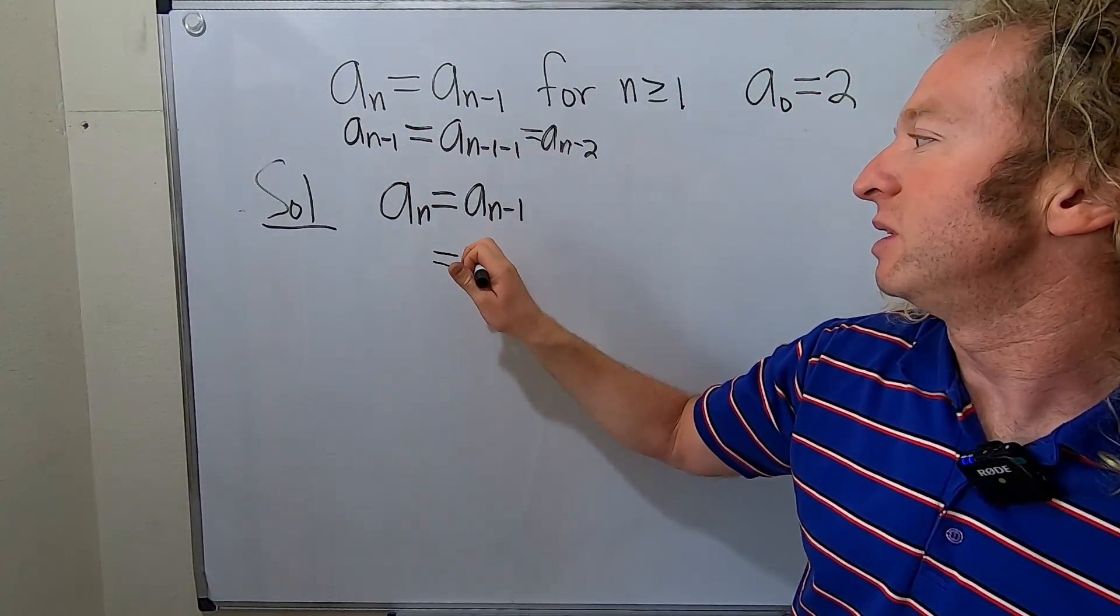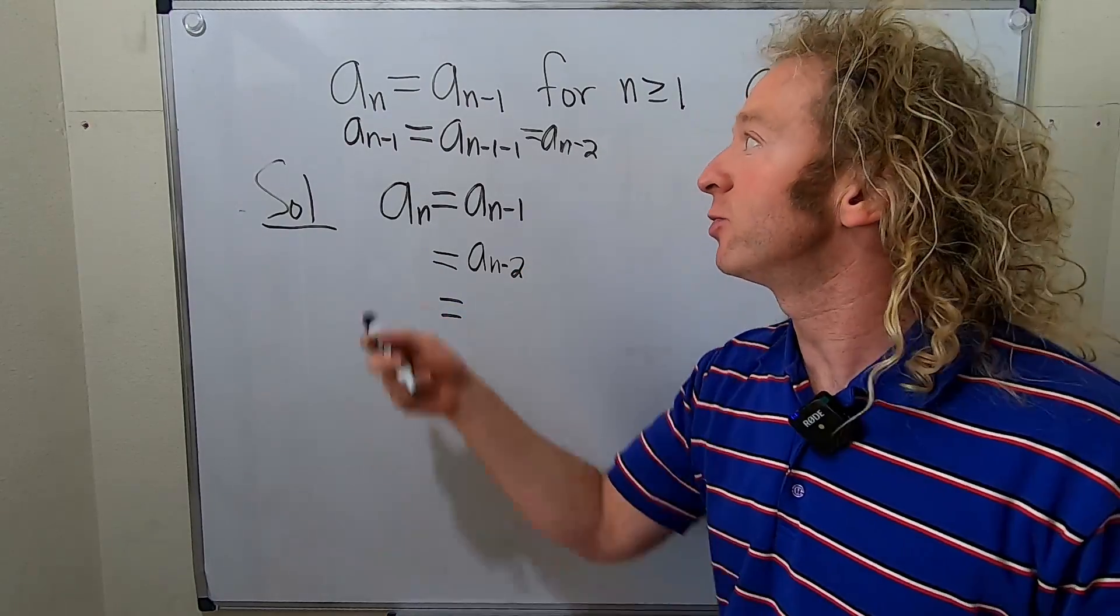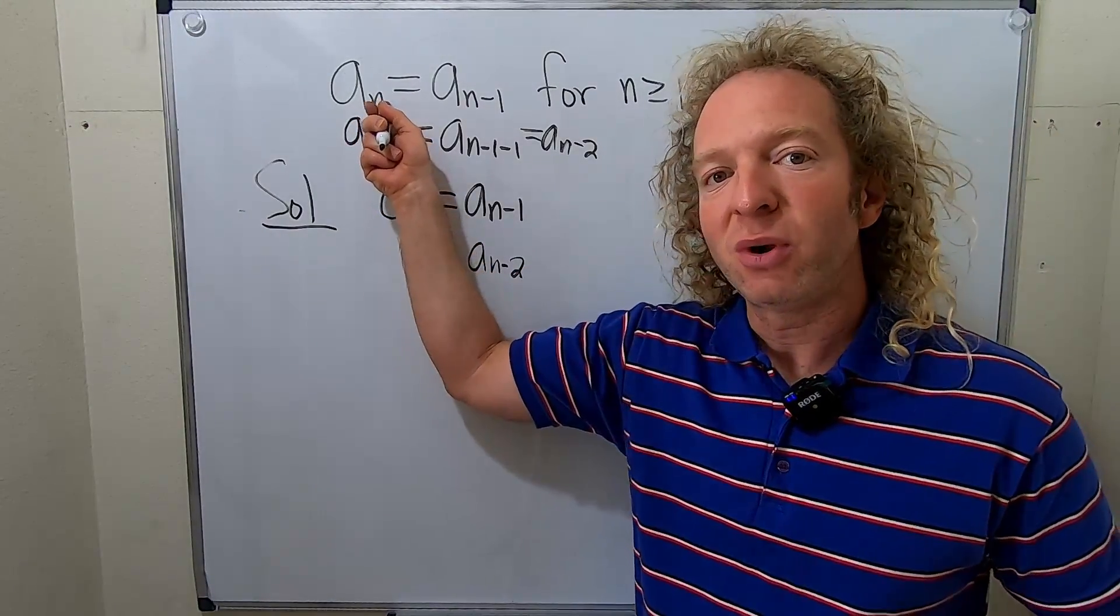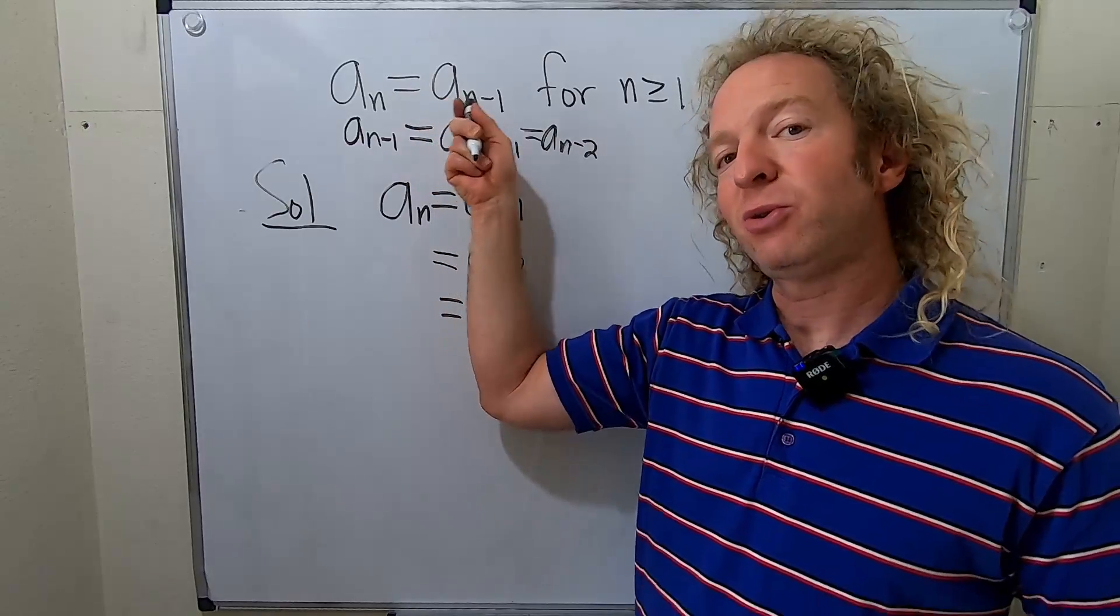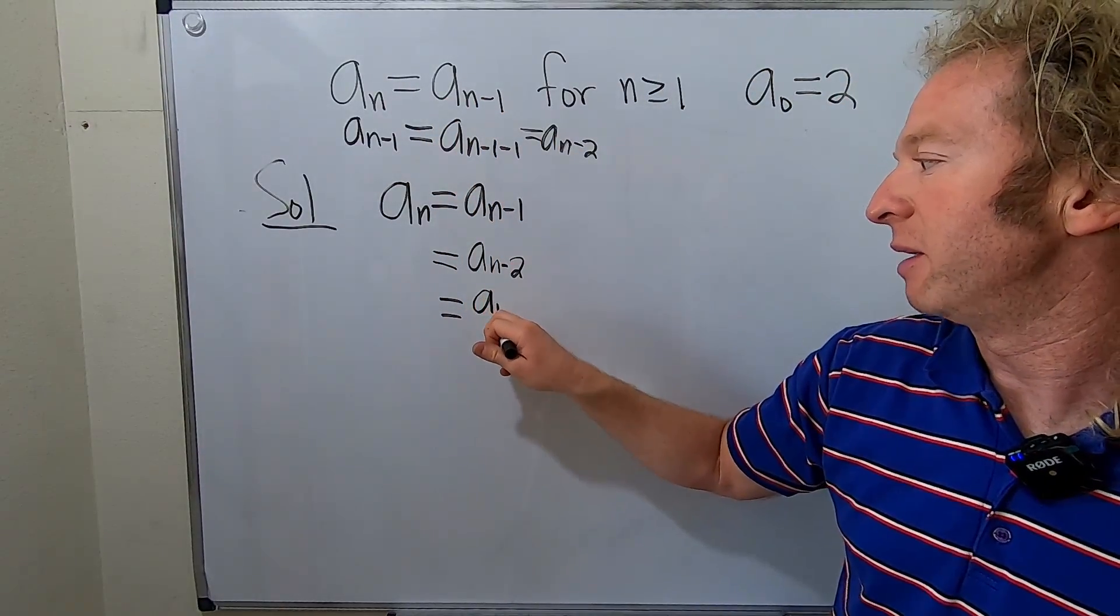So then this is going to be a sub n minus two. Then you backtrack again - replace n with n minus two. That will be n minus two minus one, so that's n minus three. This is a sub n minus three.